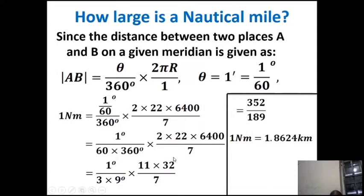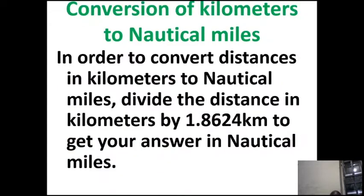So, once you hear one nautical mile, you are talking about 1.8624 kilometers, or 1,862.4 meters if you want to convert to meters. To convert distances in kilometers to nautical miles, we divide the distance in kilometers by 1.8624 kilometers to get our answer in nautical miles.